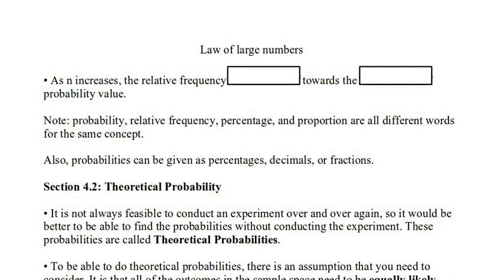So as n increases, that is, as you perform the experiment more and more times, the larger the number of times you perform the experiment, that relative frequency of successes, of finding what you're interested in, tends towards the actual probability value.